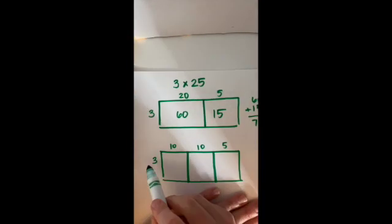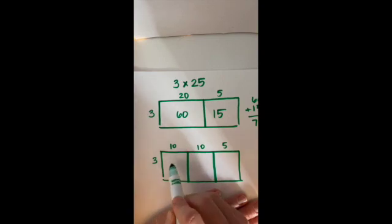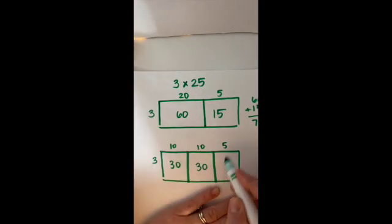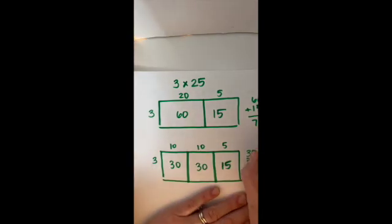Now if you like the second version where we broke that 25 into smaller parts, let's check that. Just like before, I'm going to multiply out each part. 3 times 10 is 30, 3 times 10 is 30, and 3 times 5 is 15.